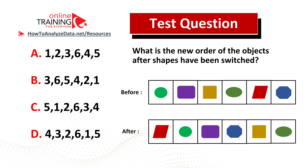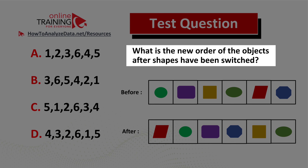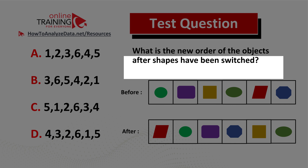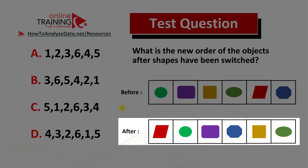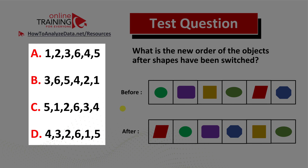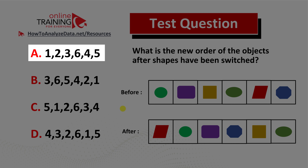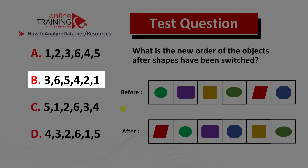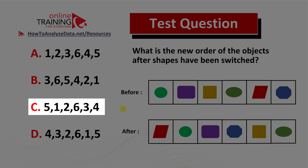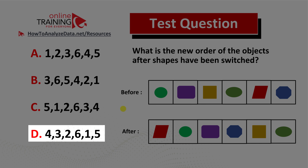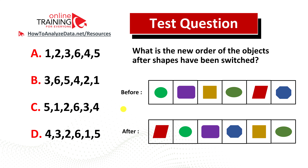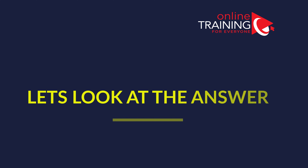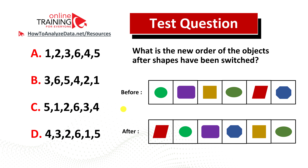Here is a tricky question from the real test. What is the new order of the objects after shapes have been switched? You have a before picture and an after picture of the same objects in a different order, with four choices: choice A: 1 2 3 6 4 5; choice B: 3 6 5 4 2 1; choice C: 5 1 2 6 3 4; and choice D: 4 3 2 6 1 5. Now might be a good time to pause this video to come up with the solution on your own.